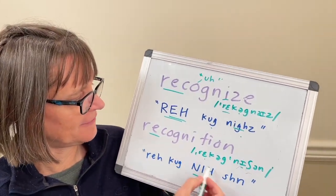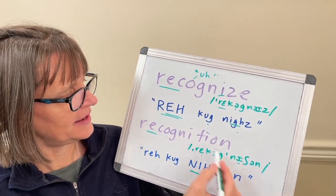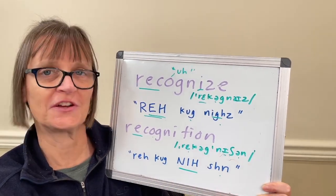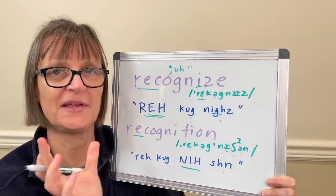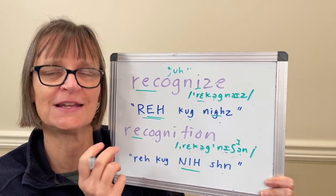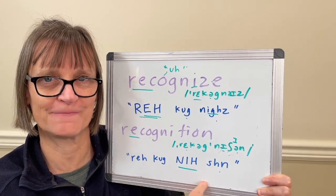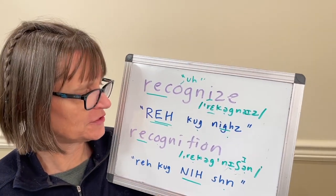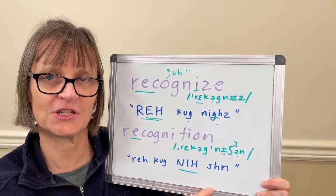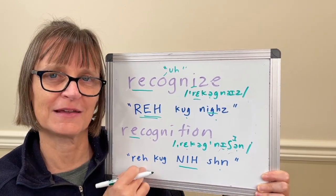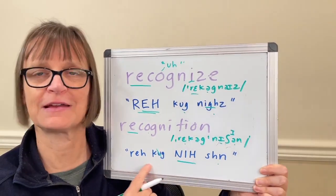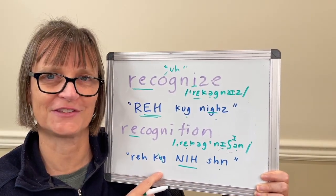We again have the schwa for the letter 'o,' and then the '-shun' syllable — you'll see it in the dictionary with an 'uh' or 'ih' sound — but it's a very reduced vowel. Move quickly from the 'sh' to the 'n': '-shun,' with almost no vowel there. Recognition. If you have trouble with the stress pattern, try starting on the stressed syllable: '-nishun' — recognition. That can help you get the '-rec' part quick enough and keep your vowel sounds very reduced. In 'recognition,' we almost have no vowel in that syllable as well.